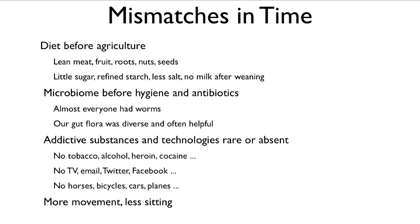Mismatches in time: before agriculture, we primarily ate lean meat, fruit, roots, nuts, and seeds. We had little sugar, no refined starch, less salt, and we did not drink milk after we were weaned, because we had no dairy animals — they hadn't been domesticated yet. Before hygiene and antibiotics, our microbiome was quite different. Almost everyone had worms of some sort, and our gut flora was diverse and often helpful. Our gut bacteria, for example, mediate our energy uptake — some protect us from diabetes, and others produce vitamins for us.